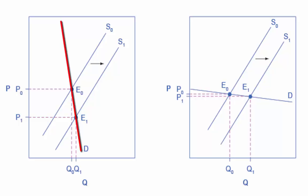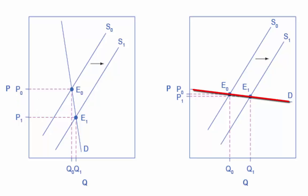If demand is inelastic, as in the graph on the left, the result of this cost-saving technological improvement will be substantially lower prices. If demand is elastic, as in the graph on the right, the result of the same cost-saving technological improvement will be only slightly lower prices.